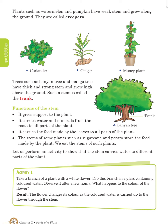Plants such as watermelon and pumpkin have weak stems and grow along the ground. They are called creepers. Trees such as banyan and mango tree have thick and strong stems and grow high above the ground. Such a stem is called a trunk.